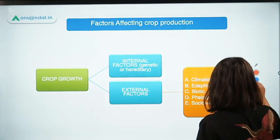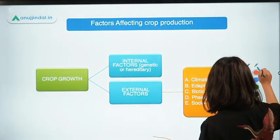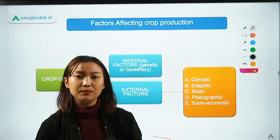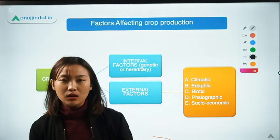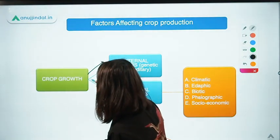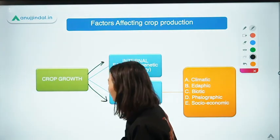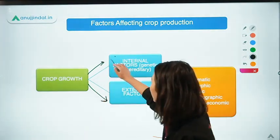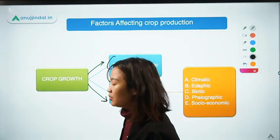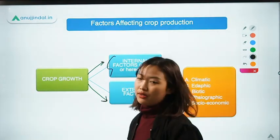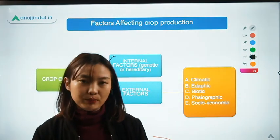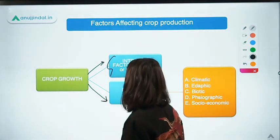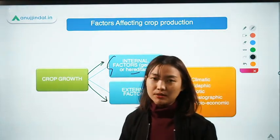Coming to the topic, crop growth can be broadly classified — the factors which affect crop growth fall into two categories. The first one is internal factors. Internal factors are nothing but the factors which are influenced by the genes, the genetic makeup, or the hereditary characteristics in the plant.